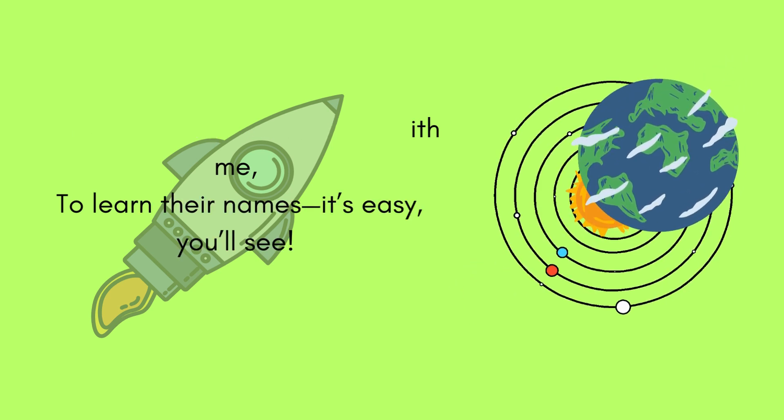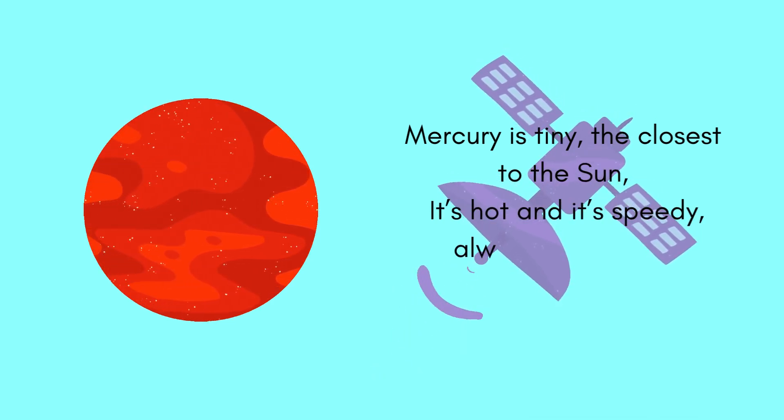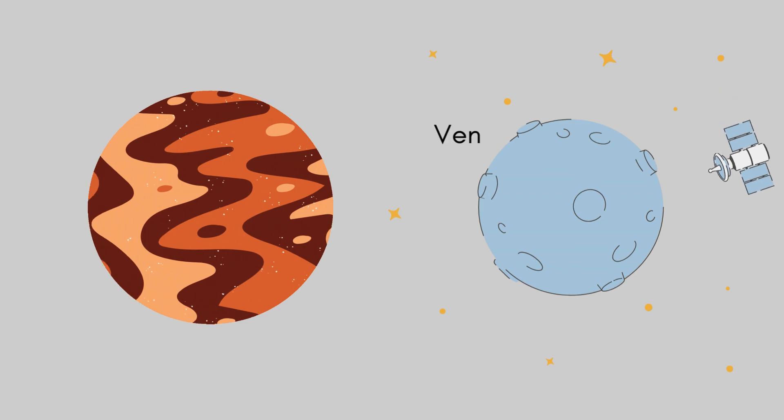It's easy, you'll see. Mercury is tiny, the closest to the sun. It's hot and it's speedy, always on the run. Venus comes next,